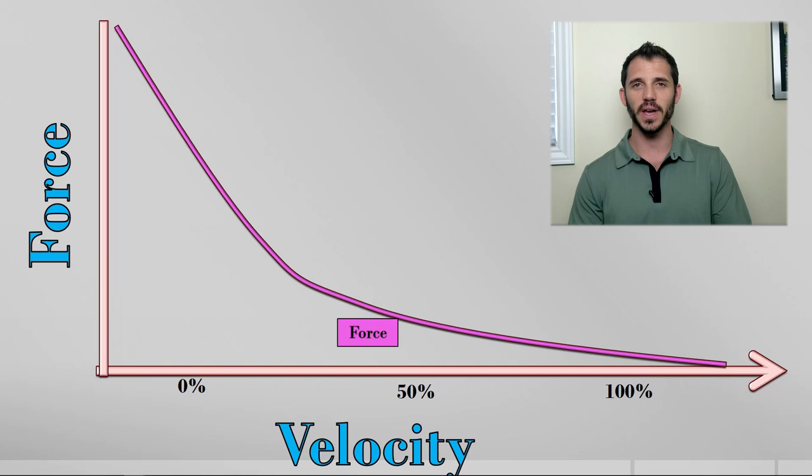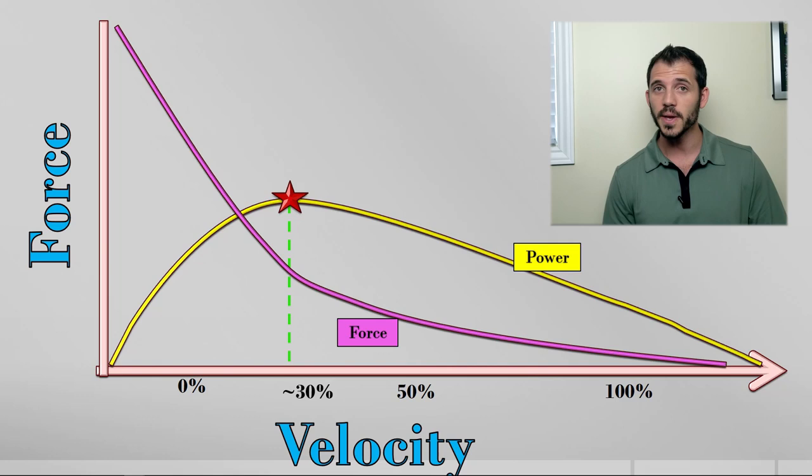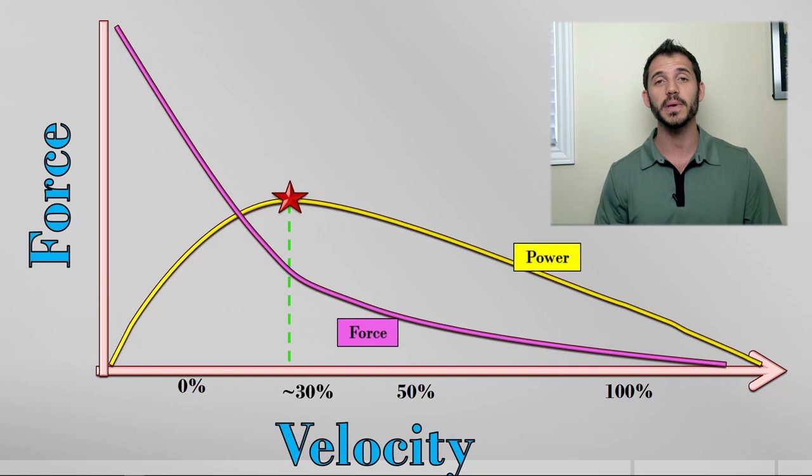So you know this relationship already because you know the heavier something gets, the slower it moves. It doesn't have to be more complicated than that. Where this intervenes with power, though, is the derivation of this. Here's what I mean. If I can multiply force and velocity equal power, I can generate what's called a power curve. So this is our answer, right? How heavy do I lift if I want to maximize power?